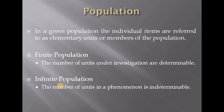Population can be finite or infinite. Finite means countable or determinable, and infinite means indeterminable or uncountable. Finite means the number of units under investigation are determinable — for example, a population of students is countable. Infinite population means the number of units in a phenomenon is indeterminable or uncountable. A population contains elements that can be either finite or infinite.